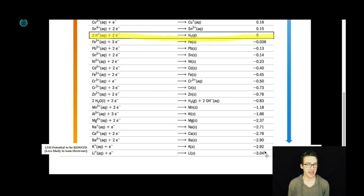What that tells me is these things are less and less likely to gain electrons. Notice we can tell that because their reduction potential, their potential to gain electrons, their potential to be reduced gets more and more negative.